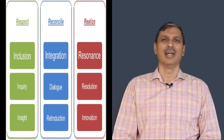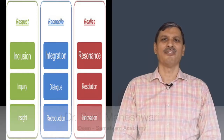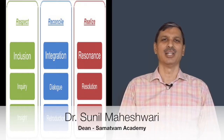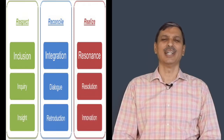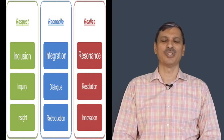At the affective, or the feelings level, respect begins with inclusion — that is, a felt connection between two or more individuals and groups — that leads to integration, which is the assimilation of the divergent needs and views of the people. This finally yields resonance, which is a felt sense of energy and rhythm.